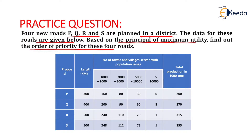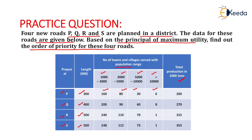The proposed roads are P, Q, R and S, whose lengths are 300 km, 400 km, 500 km and 500 km respectively. The number of towns and villages served with population ranges — 1000 to 2000, 2000 to 5000, 5000 to 10,000 and 10,000 and above — is shown for all roads P, Q, R and S. Total agricultural production in 1000 tons is also shown.